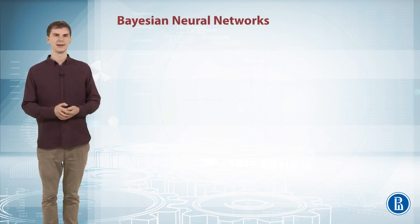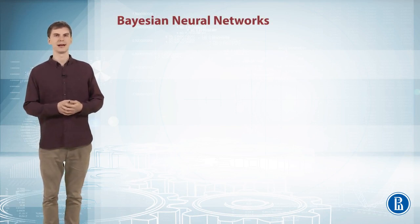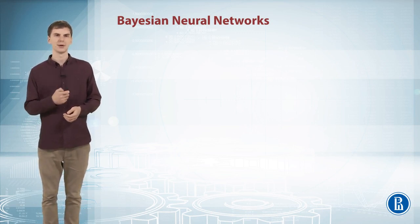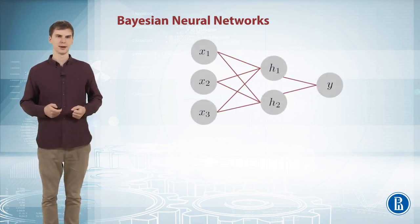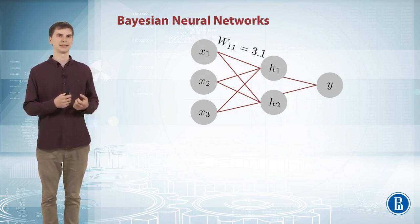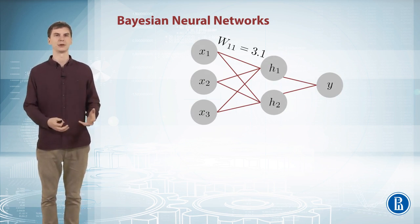In the last video of this week, let's discuss how we can apply Markov chain Monte Carlo to Bayesian neural networks. So this is your usual neural network and it has weights on each edge. Each connection has some weights which we train during basically fitting our neural network into data.